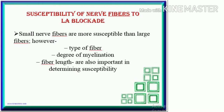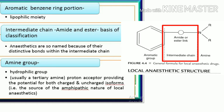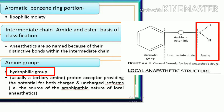Local anesthetic structure consists of an aromatic benzene ring portion (lipophilic moiety), an intermediate chain (amide and ester — basis of classification), and an amine group (hydrophilic group), usually a tertiary amine — a proton acceptor providing the potential for both charged and uncharged isoforms, i.e., the source of the amphipathic nature of local anesthetics.